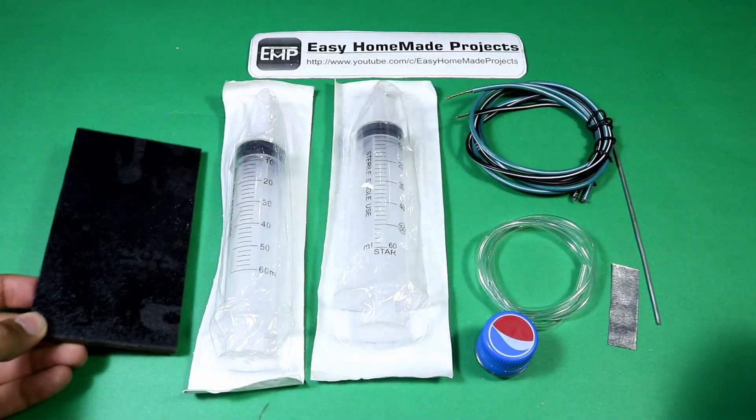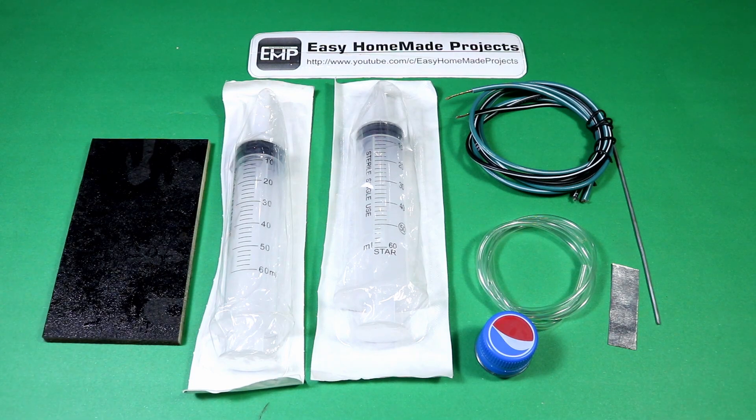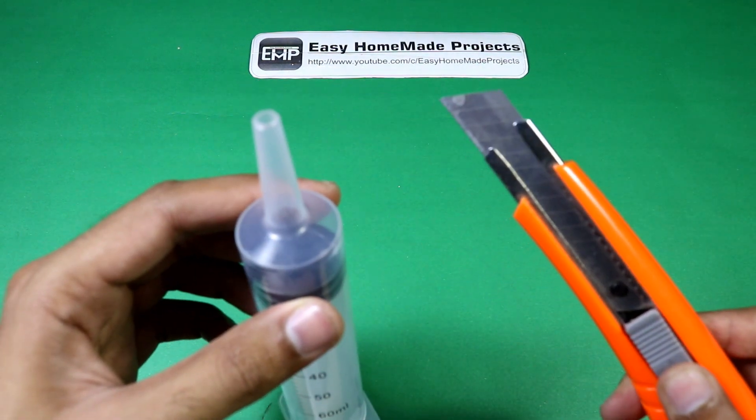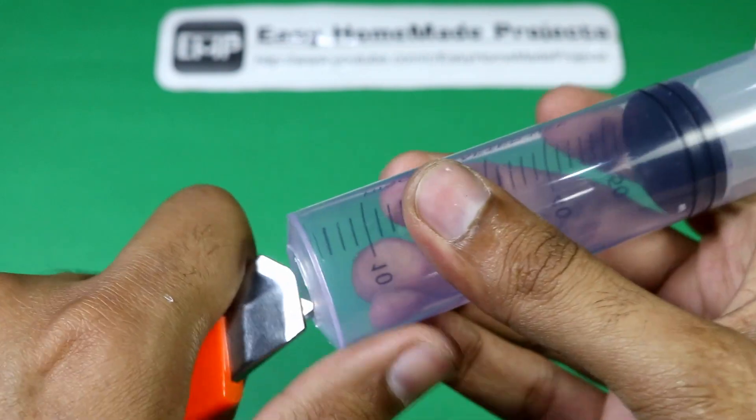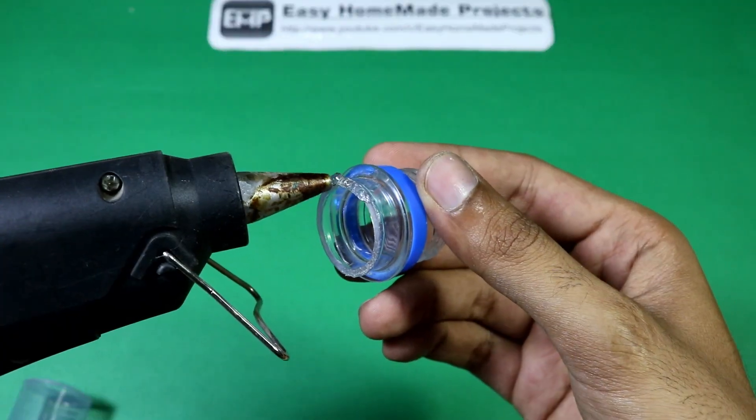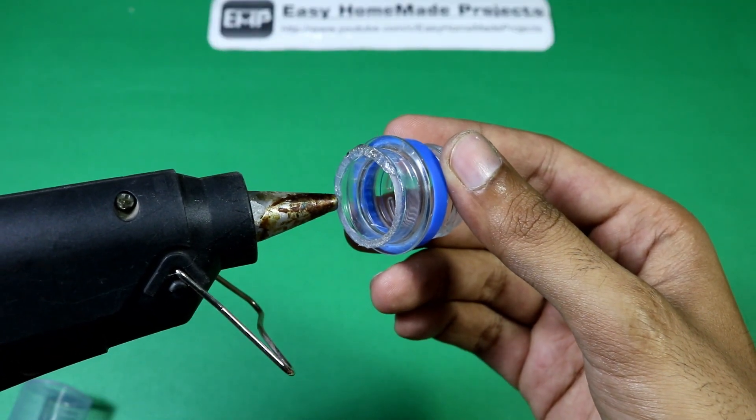And a small piece of wood we will use for the base. Make a small opening at the top of a syringe and fix the bottle head on it using some hot glue.